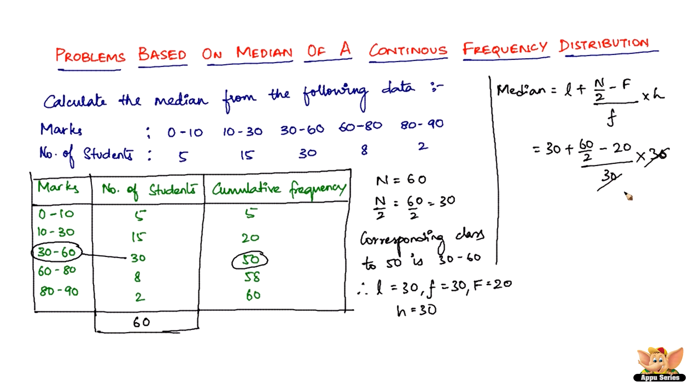The 30, 30 gets cancelled. And then we've got 30 plus 60 by 2 is 30 minus 20. So 30 plus 30 minus 20 is 40. So the median of this given continuous frequency distribution is found to be 40.